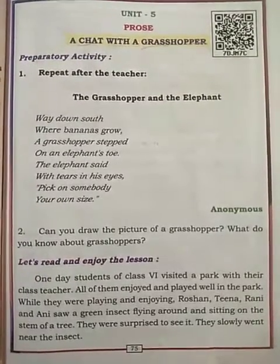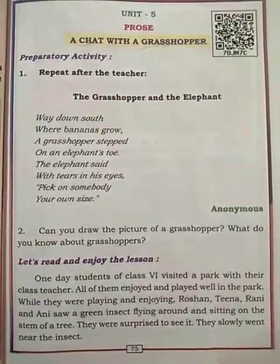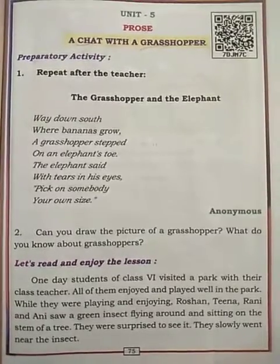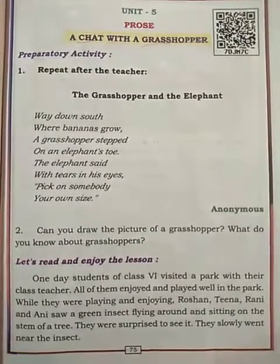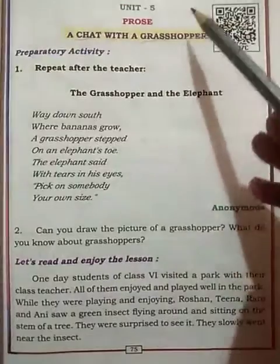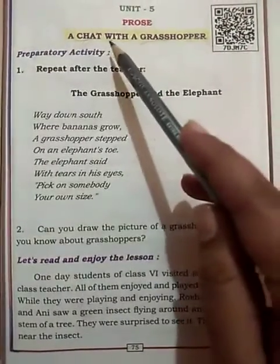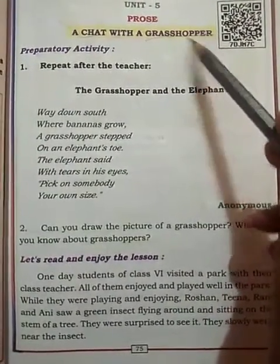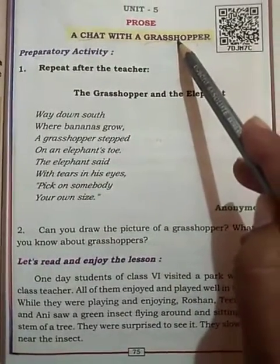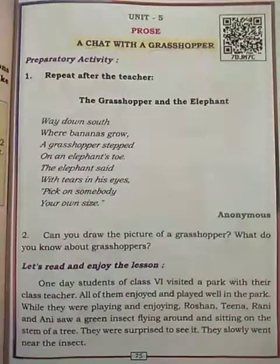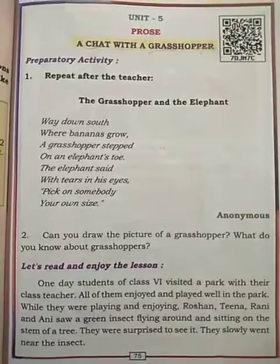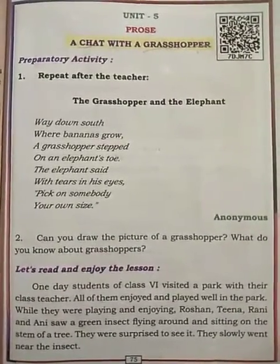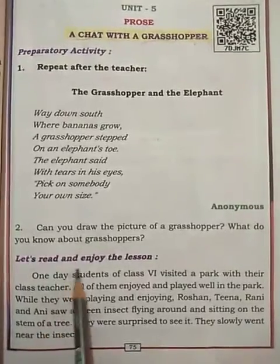Good morning, dear students. In the last class we started with the poem 'All Things Bright and Beautiful'. Now we have completed that poem and we are going to move to Unit Number 5, Prose: 'A Chat with a Grasshopper'. Today in this class we are going to do the reading comprehension. So let's read and enjoy the lesson.